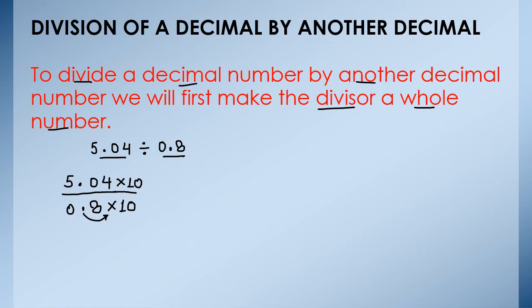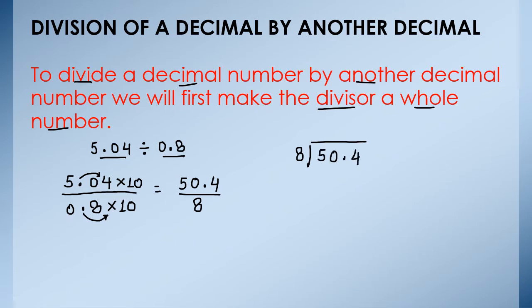So we have to multiply both numerator and denominator by 10. Now this decimal will also shift one place to the right side. This question will become 50.4 upon 8. That means now we have to divide 50.4 by 8. Now the divisor is a whole number. We can directly divide it now. So 50.4 divided by 8.